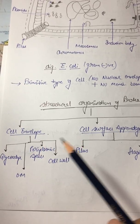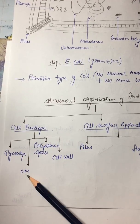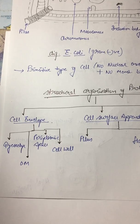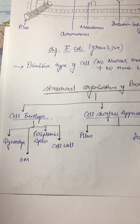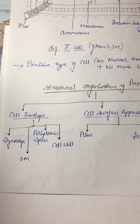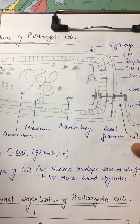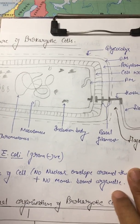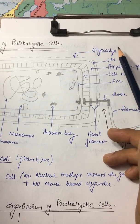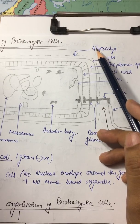So cell envelope has glycocalyx, outer membrane, periplasmic space, and cell wall. Now what is the role of glycocalyx? The glycocalyx is the outermost layer. It is hydrophilic, means water-loving, that's why present in the outermost part. It is made up of polysaccharide layer. Its main function is protection from phagocytosis.